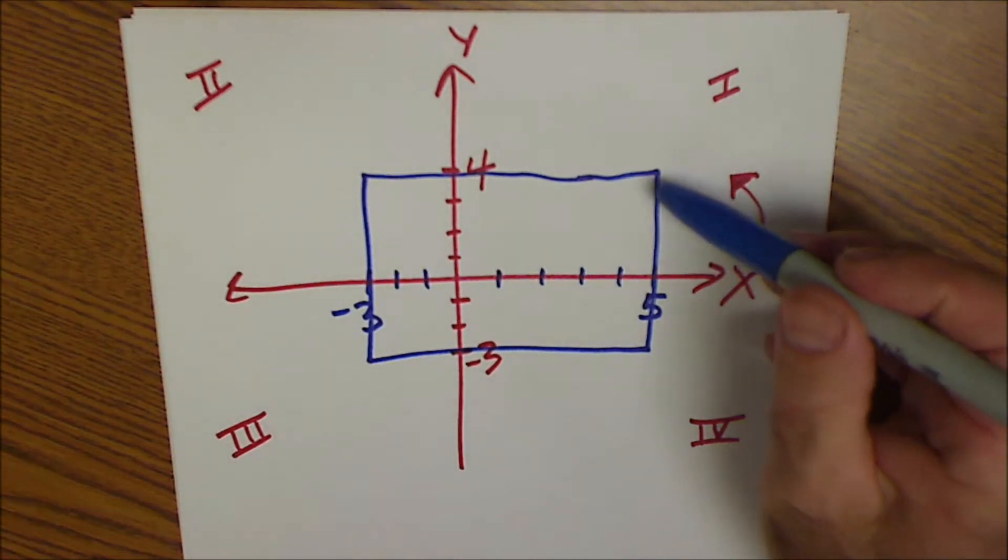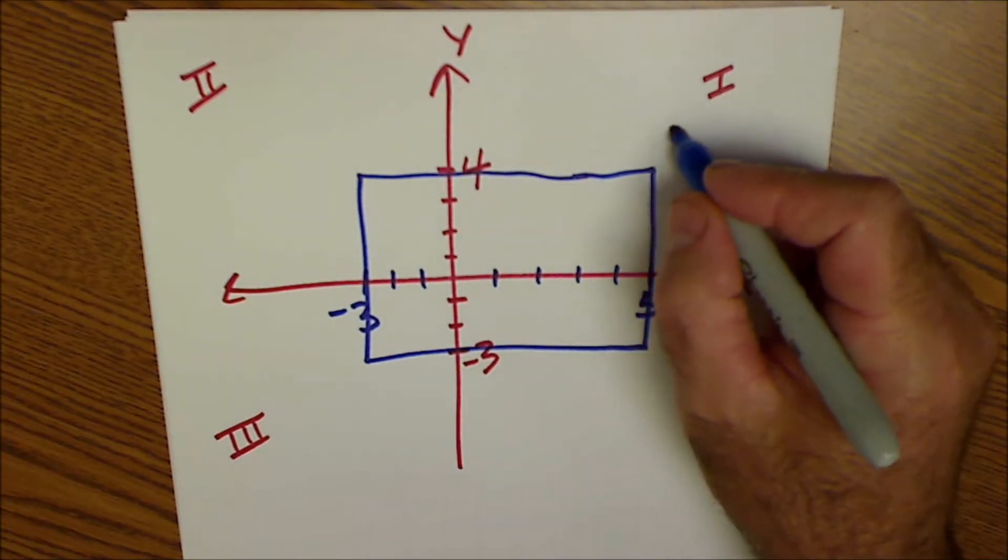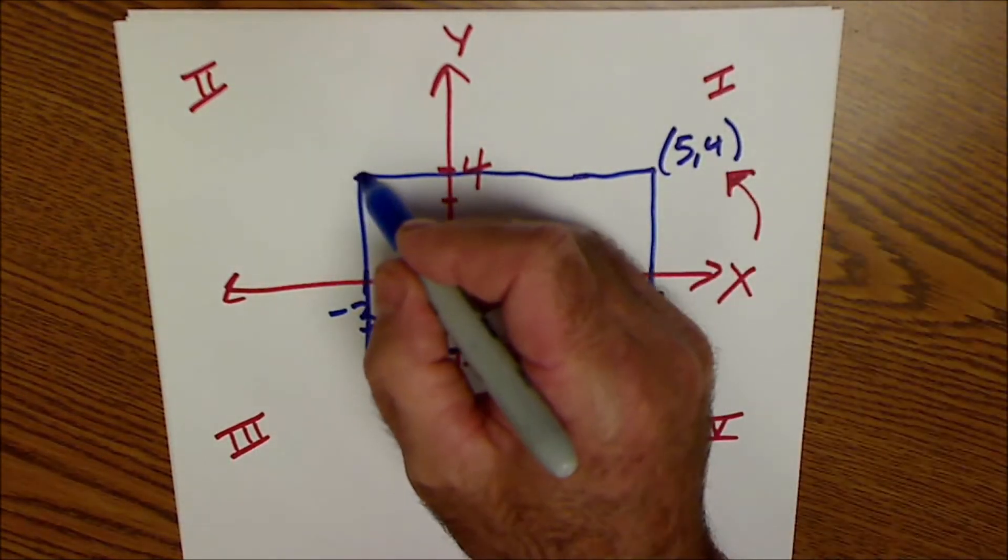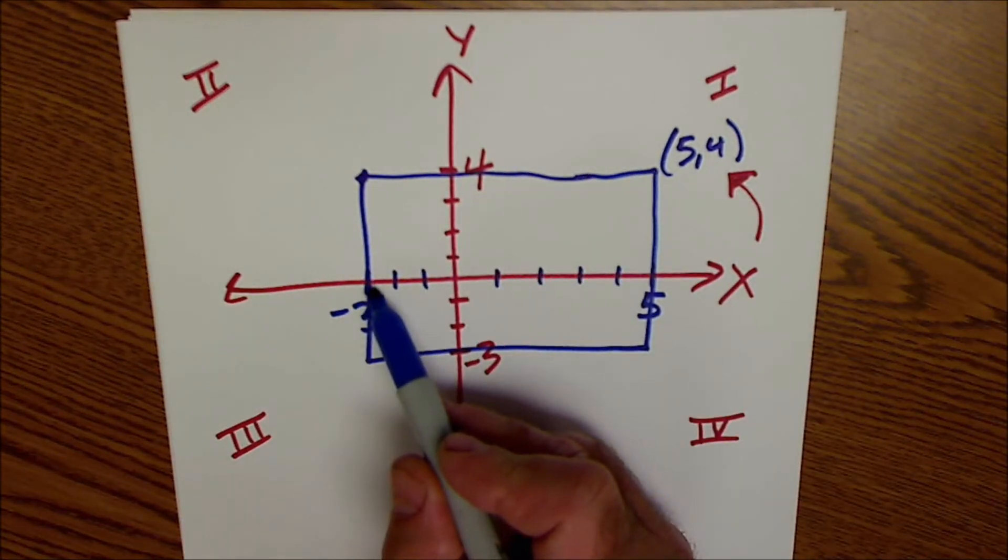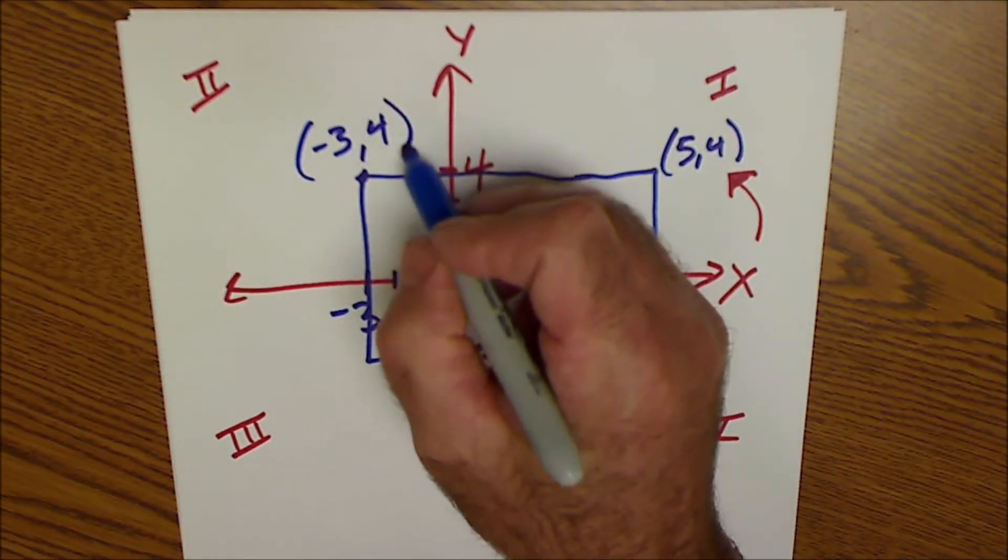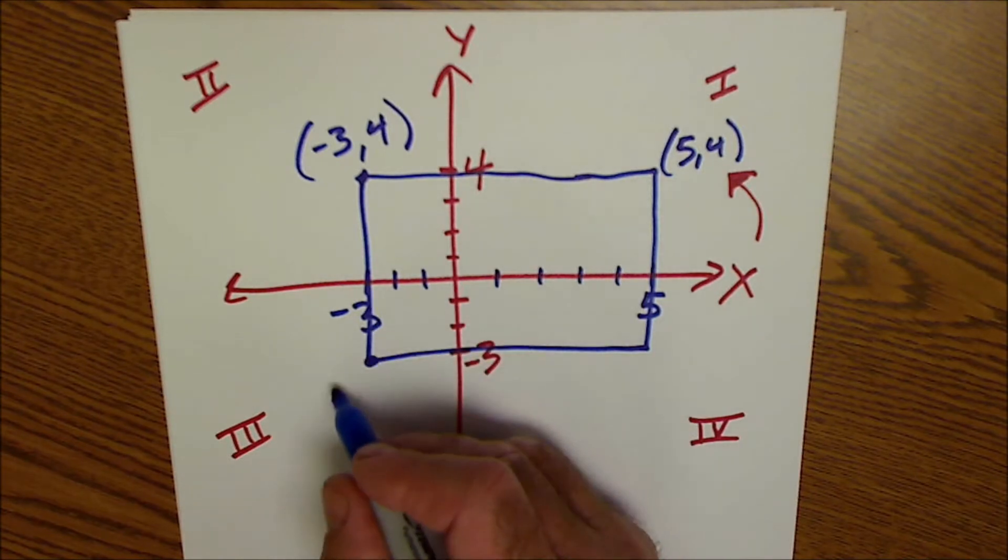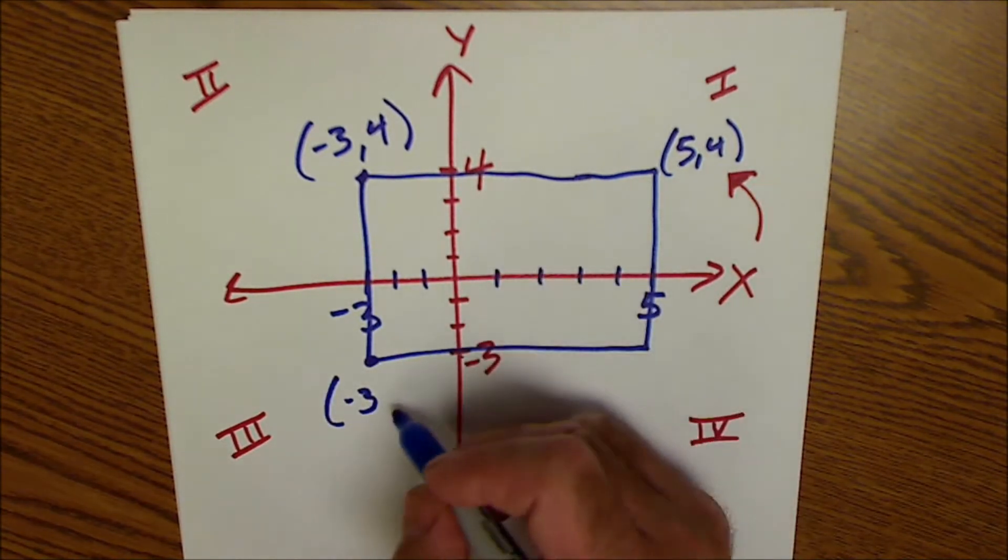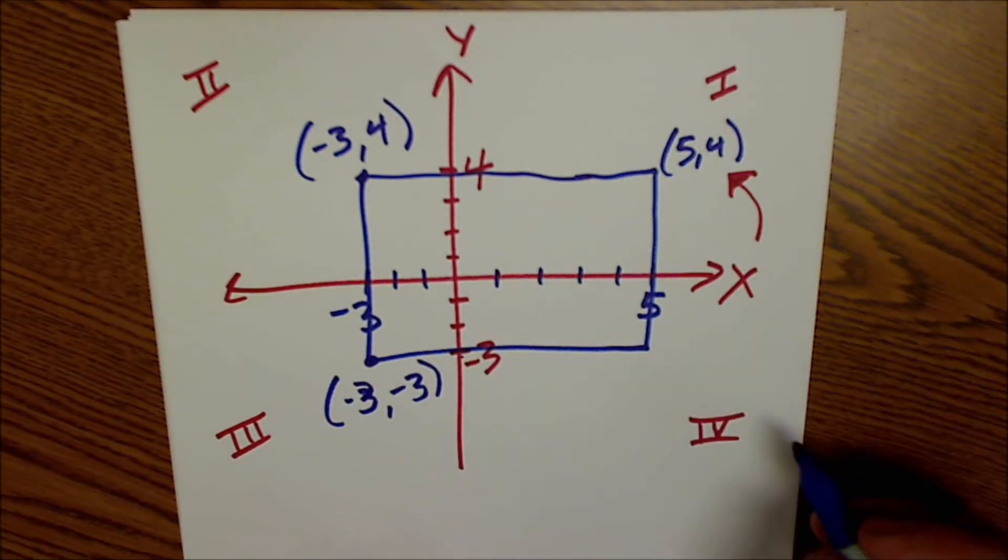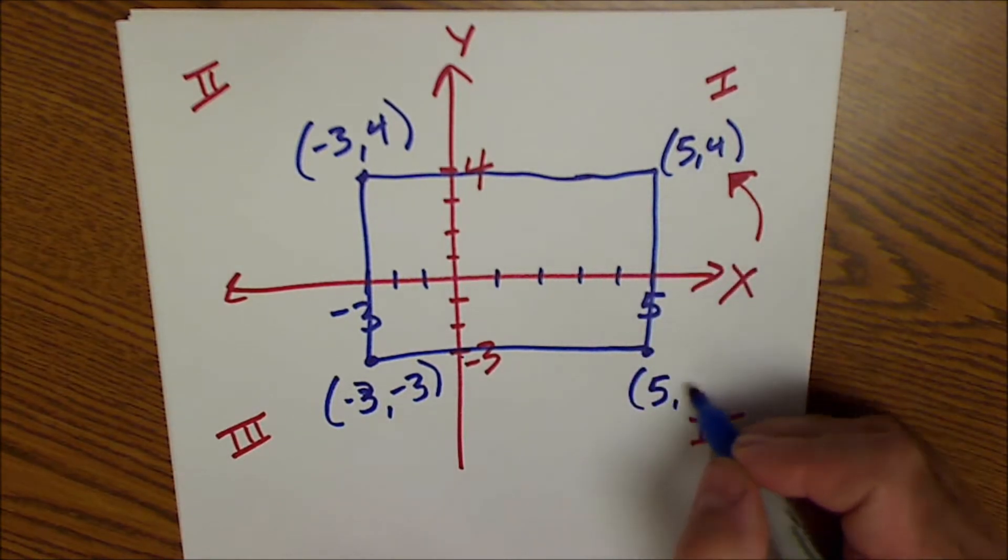So this coordinate now is still positive positive. I go over 5, up 4. So this coordinate is 5, 4. This coordinate right here, now I go over negative 3. So my X is always first, negative 3. And then I go up 4. This coordinate right here, negative 3 in the X direction. And then negative 3 coming down in the Y direction. And then this coordinate right here, X first, would be 5 over and then negative 3 down.